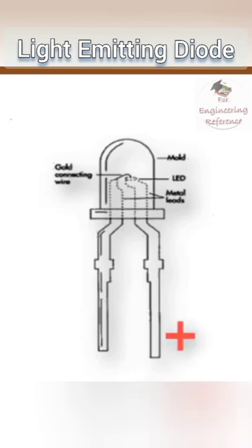When this anode is connected to positive supply and the cathode is connected to negative terminal of the voltage supply, there will be a movement of charge carriers and the recombination of electron hole pair will result in emission of the photon.